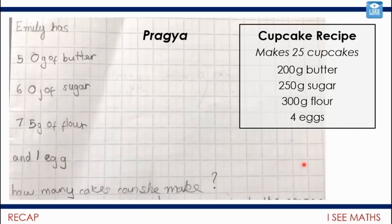To start with, some of the examples that came through from yesterday — I love these because I love the examples, and also because they came through really early. I often do my best thinking early in the morning. This one is from Pragya, and I hope I pronounce that correctly. She says: Emily has 50 grams of butter, 60 grams of sugar, 75 grams of flour, and one egg. How many cakes can she make?